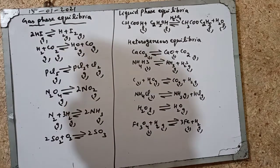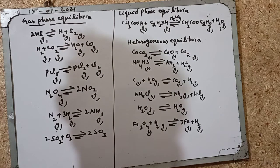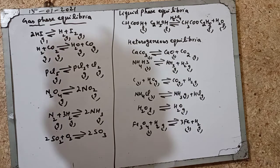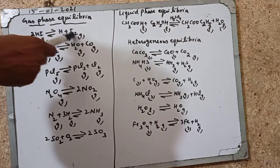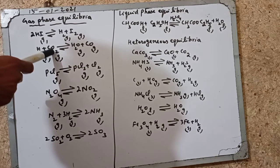Today we are studying examples of gas phase equilibrium, liquid phase equilibrium, and solid phase or heterogeneous equilibrium. First, gas phase equilibrium: 2HI breaks into H2 plus I2, another example is H2 plus CO2.